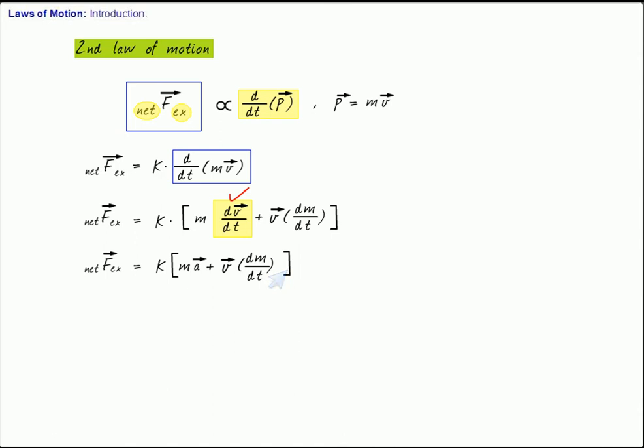Most of us think that dm/dt is going to be zero — that is, the mass remains constant. Well, in most cases the answer is yes, but not always. The rate of change of mass need not be zero always. Most of the time we discuss systems whose mass is constant, but we can also have variable mass systems, which is also part of the JEE scope.